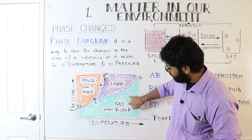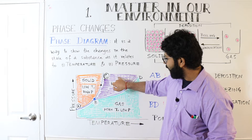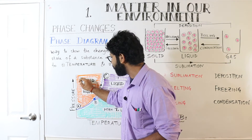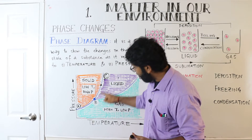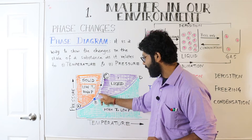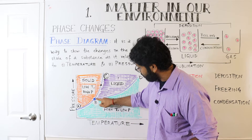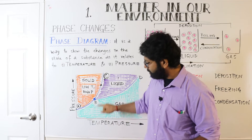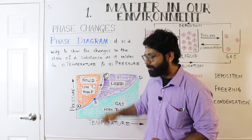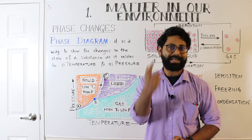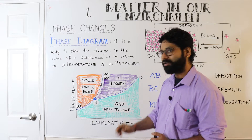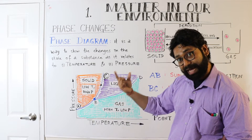If there is a point in the gas region, only gas exists. If there is a point in the liquid region, only liquid exists. If there is a point in the solid region, only solid exists. But on the BC boundary, solid and liquid are both present. Each point on the BC curved line represents a different temperature and pressure — a combination at which solid and liquid can coexist.